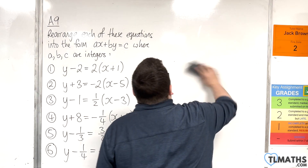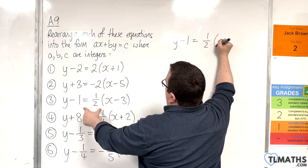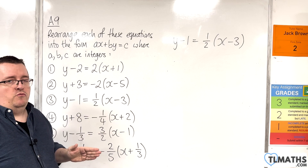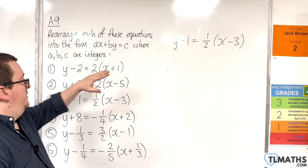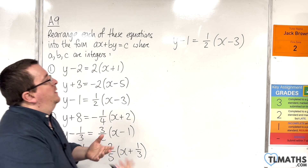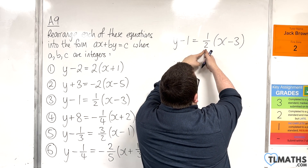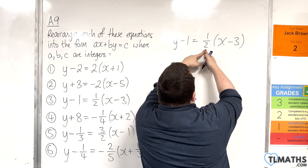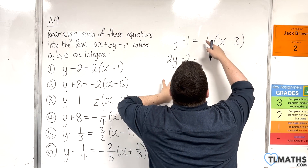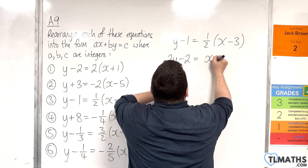Let's take a look at number 3: y minus 1 is equal to one half times x take away 3. You can multiply through the bracket first, but personally I like to deal with the fraction straight off the bat. To get rid of the fraction, multiply everything by the denominator — so multiply both sides by 2. The left hand side gives 2y minus 2, and multiplying the right side by 2 removes the fraction, leaving 1 lot of x take away 3.